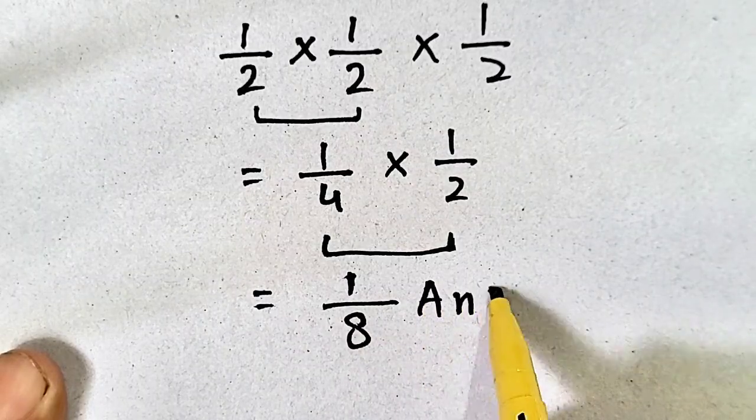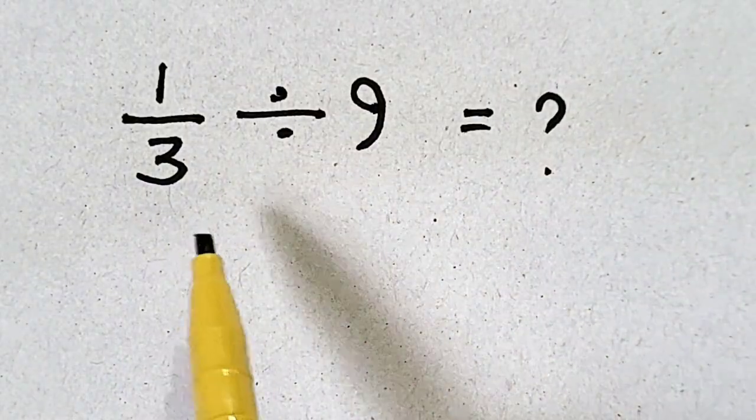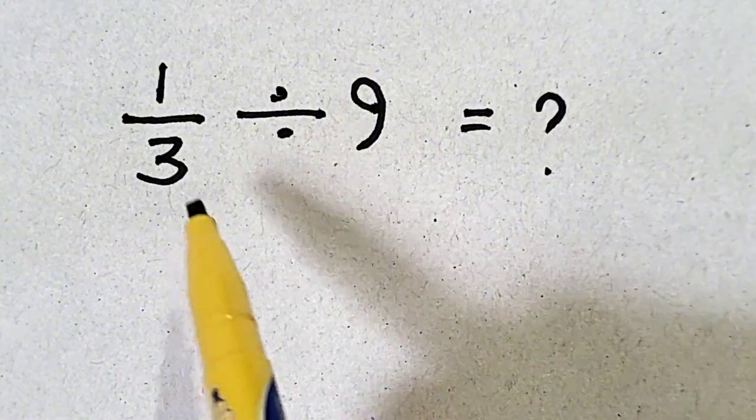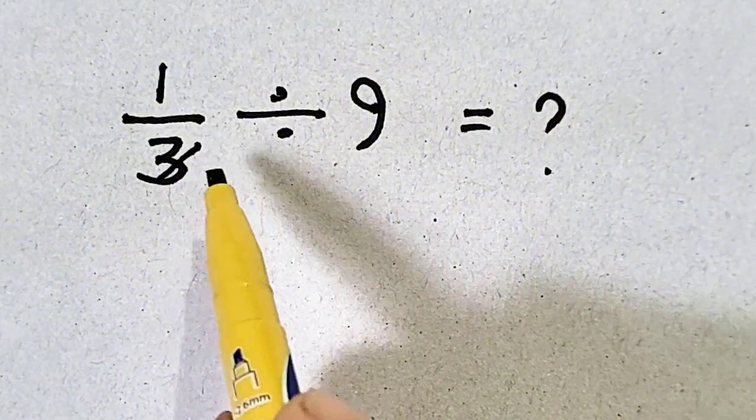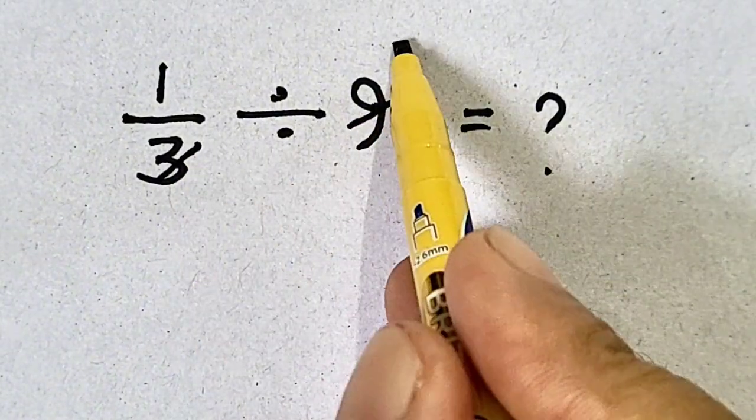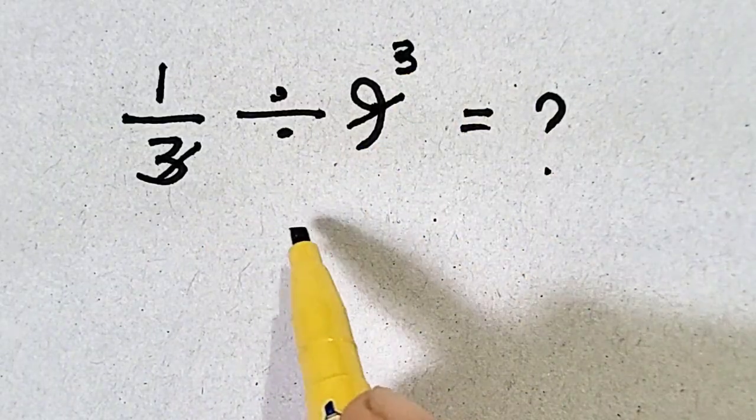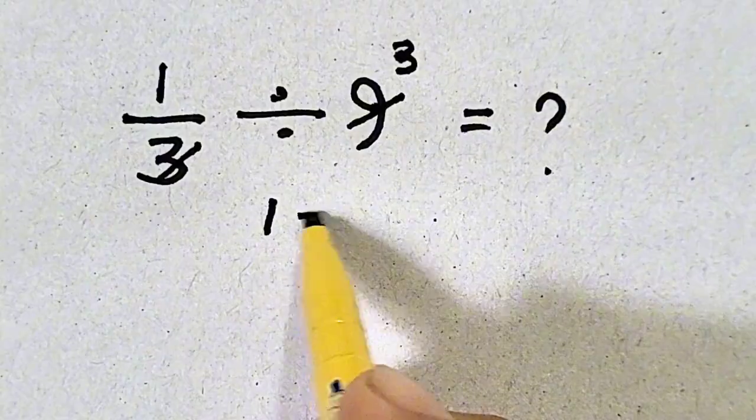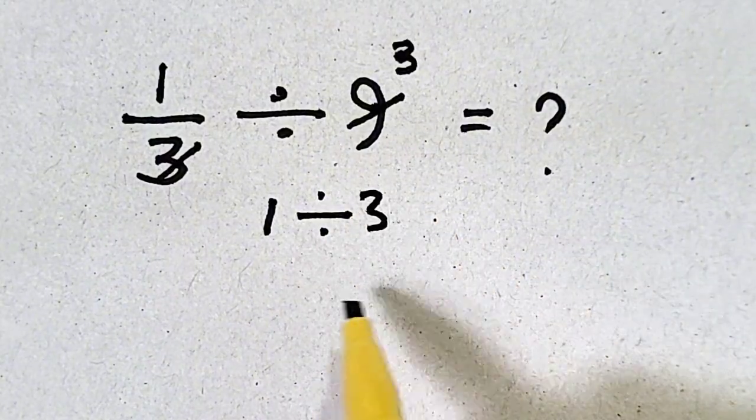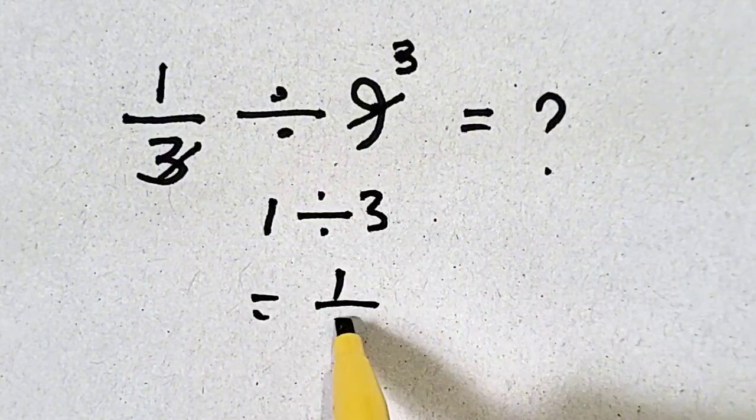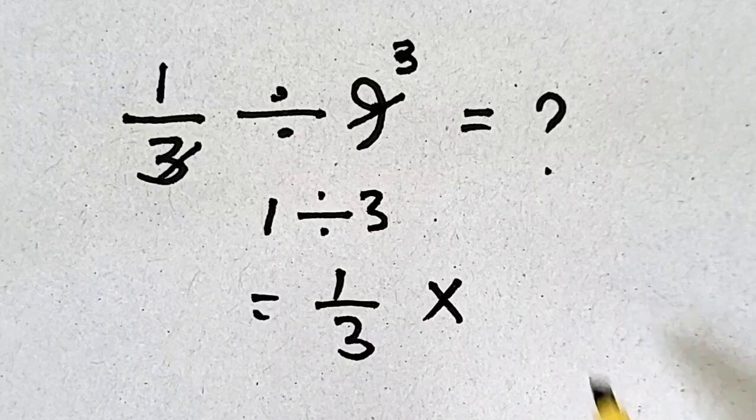Which will be our answer. Similarly, this is another problem in which students look at it in a way that 3 and 3 are cancelled, 3 and 9 are cancelled. So their answer is 1 divided by 3. But it is wrong.